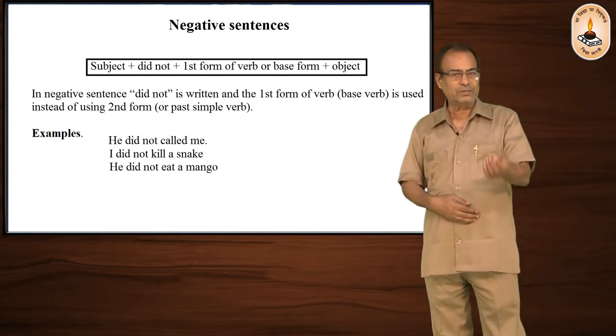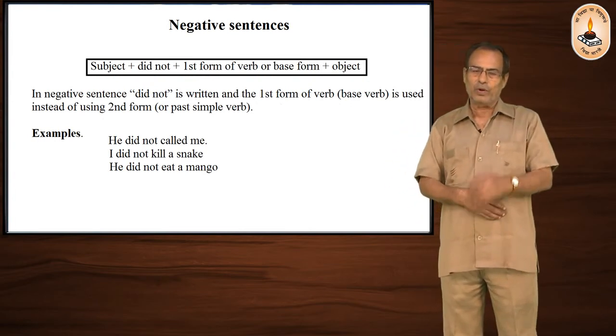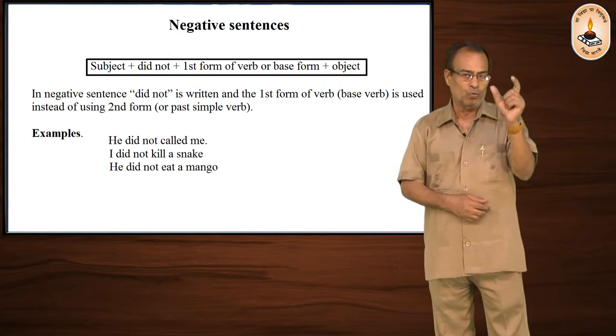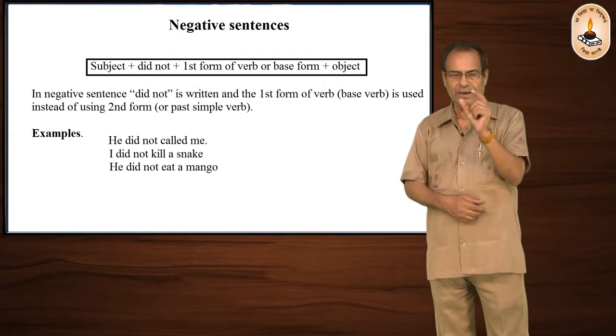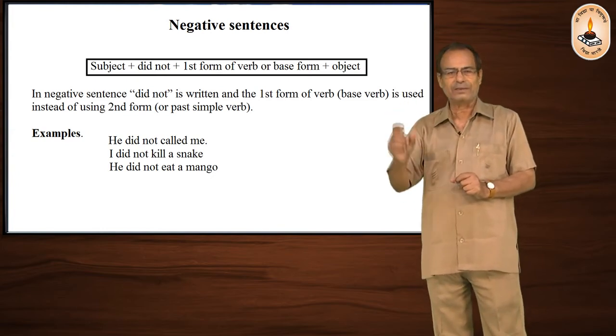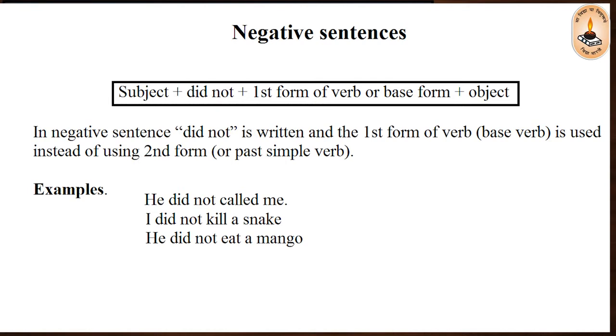When the sentence is to be made in negative, we make the structure like this. First subject, then did not, then first form, and then object. The example is: he did not call me.